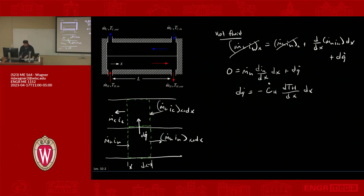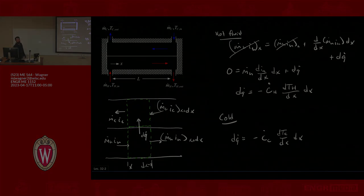If you give me 20 more seconds, I'll do the cold fluid. So cold is the same analysis, but we end up with DQ dot is equal to minus C dot C D T C D X DX. So this will let us set up a set of equations that we can then solve and get our Q dot.